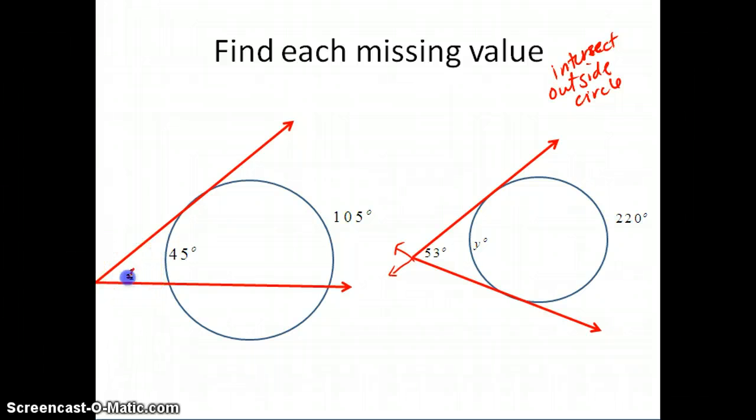To find the measurement of x, you're going to do almost the same thing where you do half, but this time it's the difference instead of the sum. So you subtract 45 from 105, and then divide that in half. So by plugging that in, you should get, I believe, 30 degrees for that angle measure.